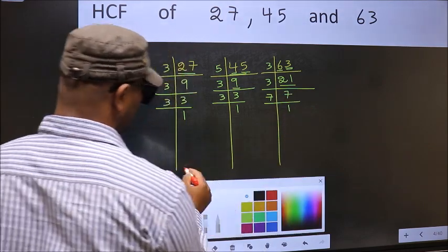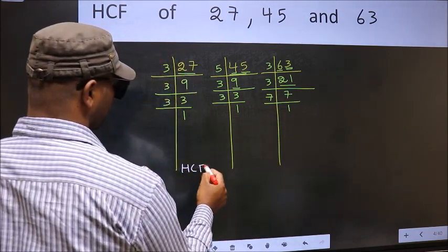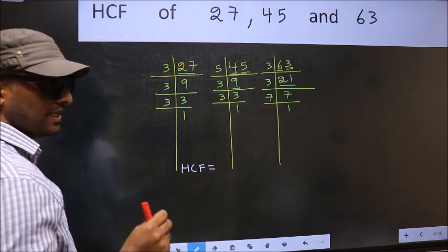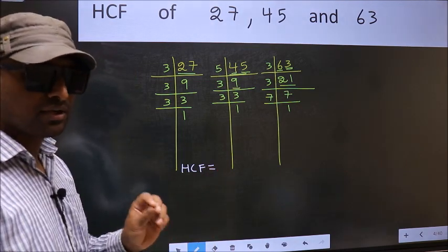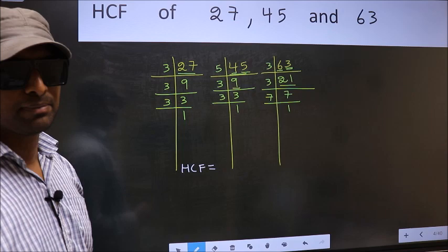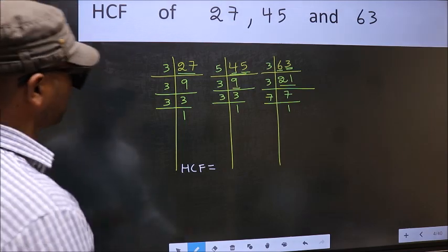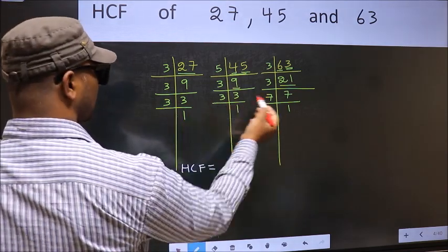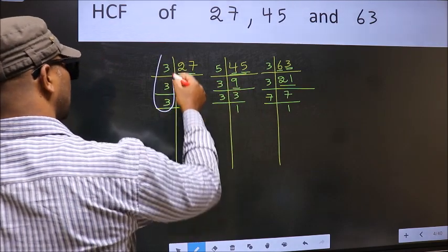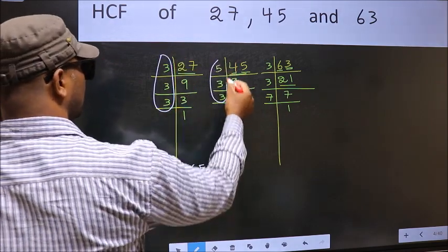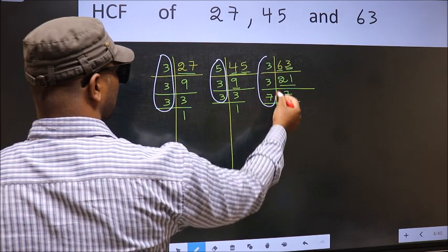Therefore HCF is the product of numbers which should be present in these 3 places. That is here, and here, and also here.